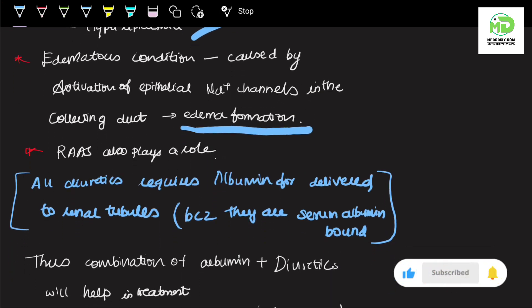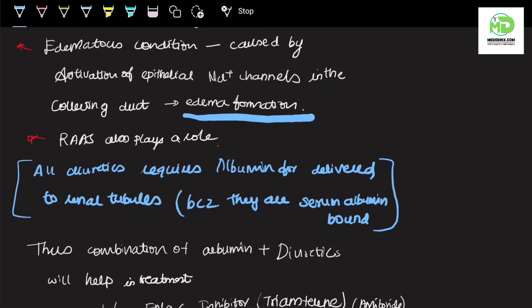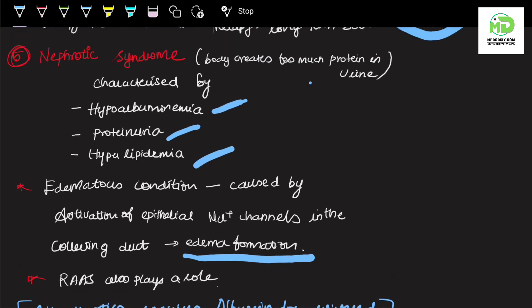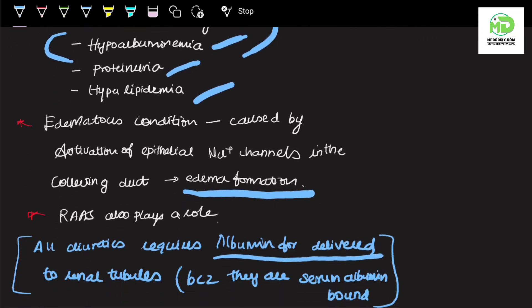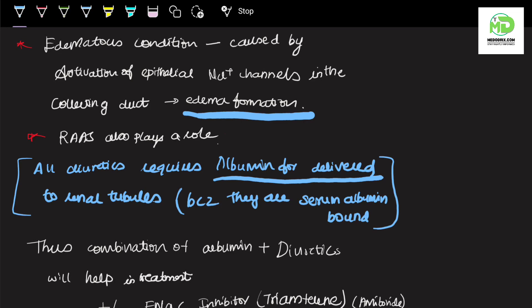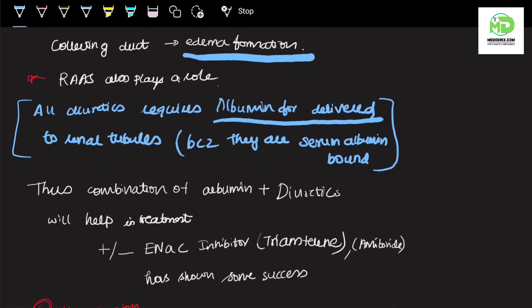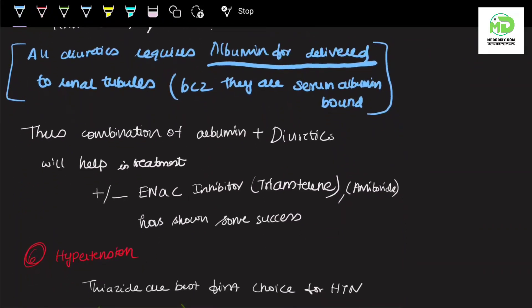The renin-angiotensin-aldosterone system also plays a role in this mechanism. All diuretics require albumin for delivering the drug to the renal tubules. In this case, there is hypoalbuminemia with reduced albumin level in the blood. Because of this, the drug cannot be carried to the renal tubules. Thus, when treating nephrotic syndrome, it is always recommended to treat with diuretic along with albumin.